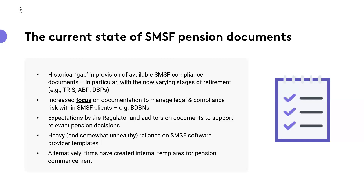We also have expectations by the regulator and auditors on documents to support relevant pension decisions. Only recently have we seen the updated and now finalised TR 2013-5 around when a pension commences and ceases — and the importance of understanding the impact of changes the ATO put in there, particularly when it comes to a pension having failed and what needs to happen to ensure the fund can continue to get ECPI in future years.